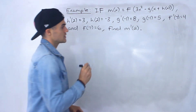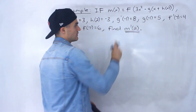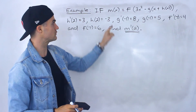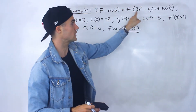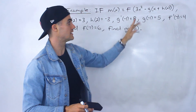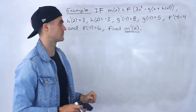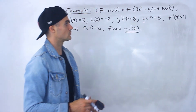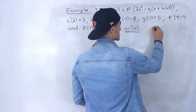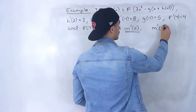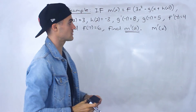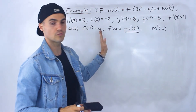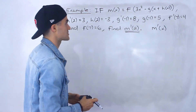So first, what are they asking for? They want you to find the derivative of m of x at an x value of 2. We've got to use all of this given information. So the first thing I'm going to do is find a general expression for m prime of x, and then plug in 2 for all the x values in that expression.